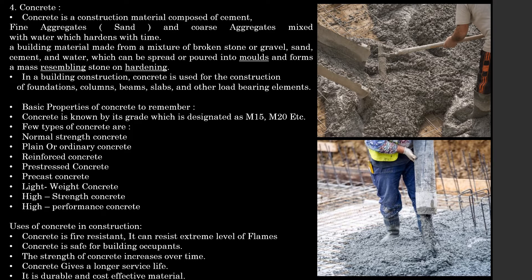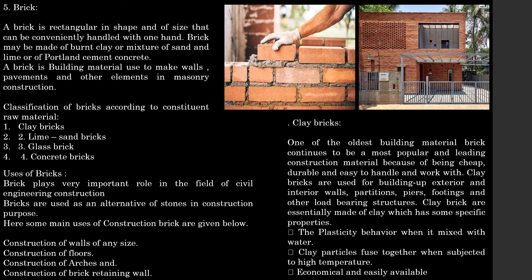Concrete gives a longer service life — it is durable and the most cost-effective material. Coming on to brick — a brick is rectangular in shape and of a size that can be conveniently handled with one hand. Brick may be made up of clay, or a mixture of sand and lime, or of Portland cement concrete. A brick is a building material used to make walls, pavements and other elements in masonry construction.